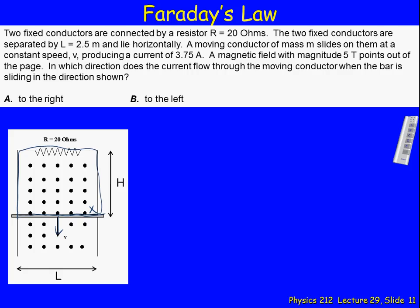And again, you have to use your right-hand rule. If I point my thumb in that direction, my fingers go into the page, which does exactly what I want. So the current's going to go around like that. The question here is: what's the direction of the current flow through the moving conductor?